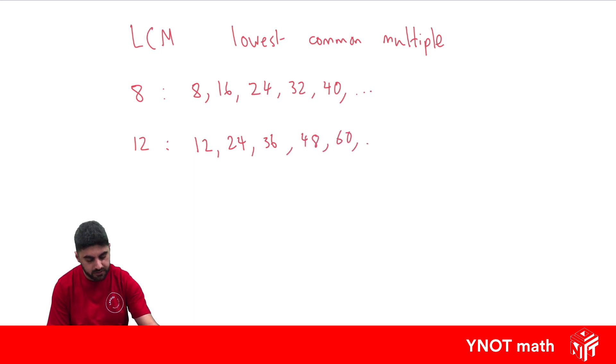The lowest common multiple is the lowest number that appears in both. The lowest number that appears in both is 24. So the lowest common multiple of 8 and 12 is 24.